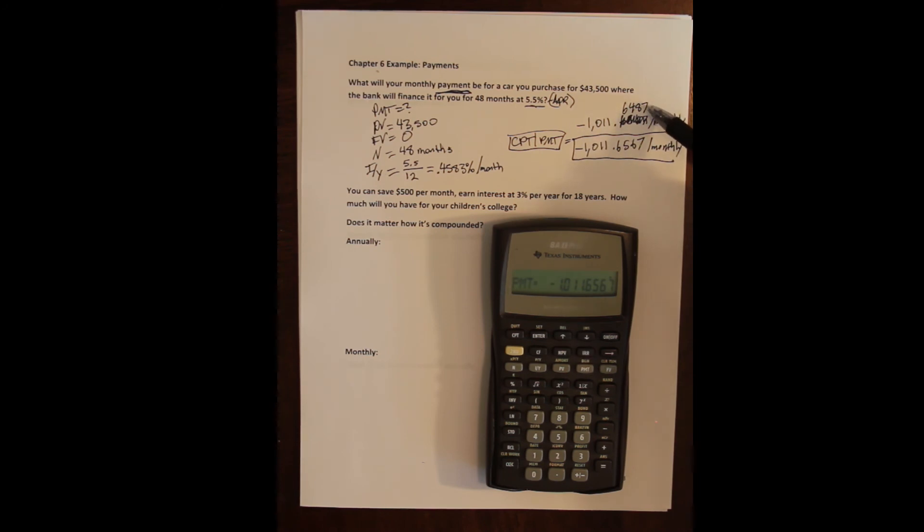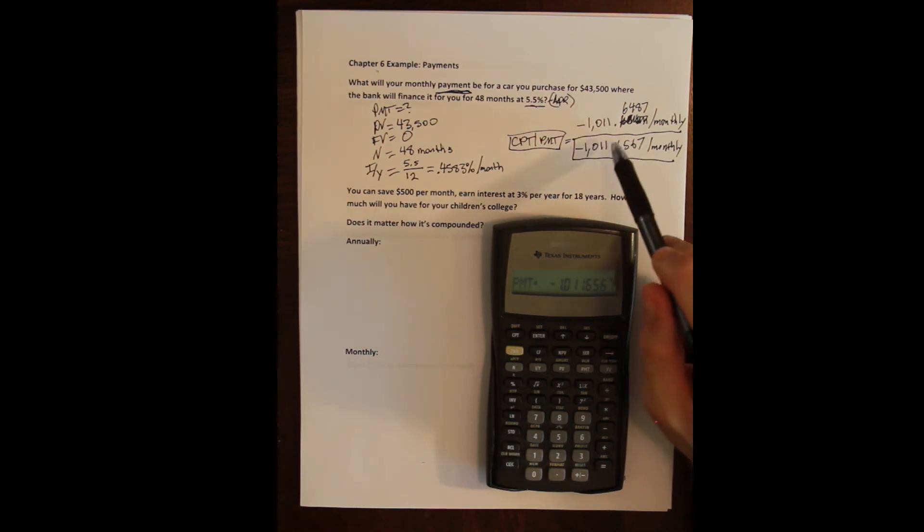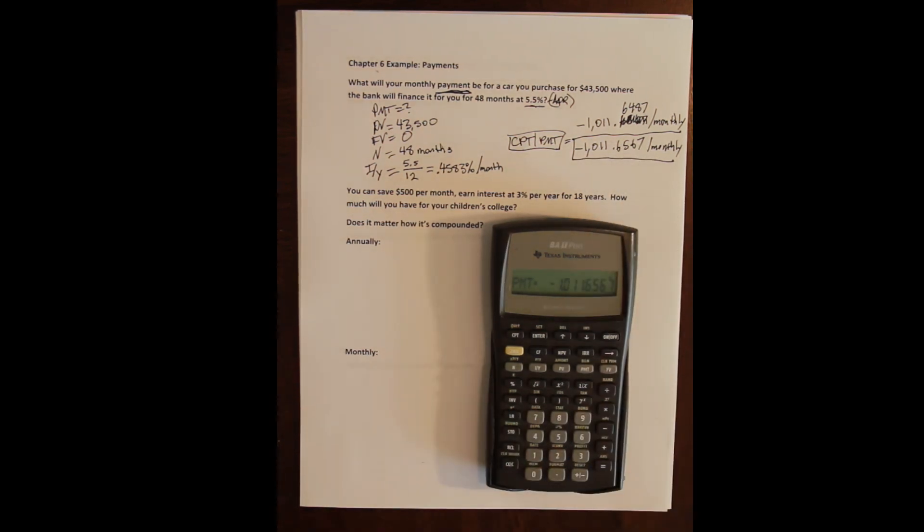So you're not going to see a problem on the exam where the answers are point six three, point six four, point six five, point six six. That's just silly. There will be a big enough gap that if there's a rounding issue you'll be close to the right answer and you'll see it and you'll remember. On the homework you need to make sure that you are following the rounding instructions exactly because the homework you are inputting the answer rather than choosing from the best selection.